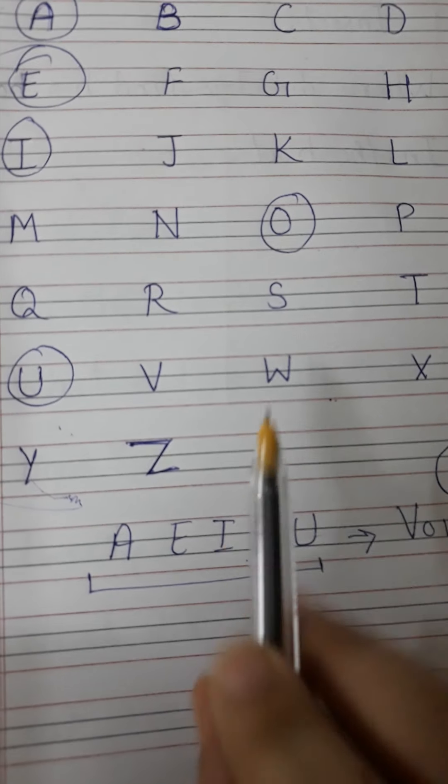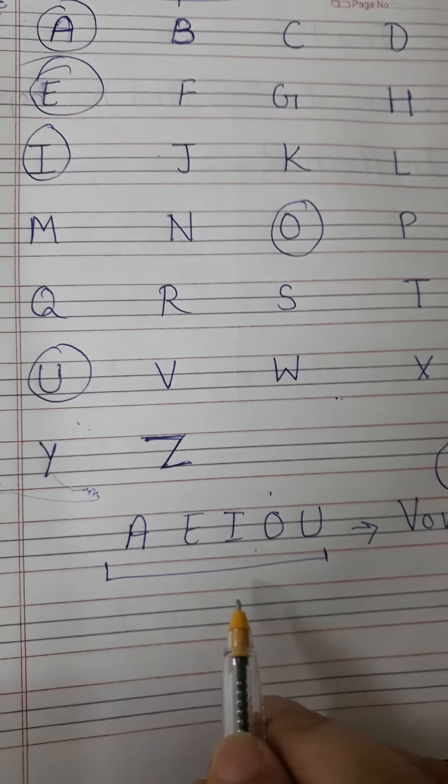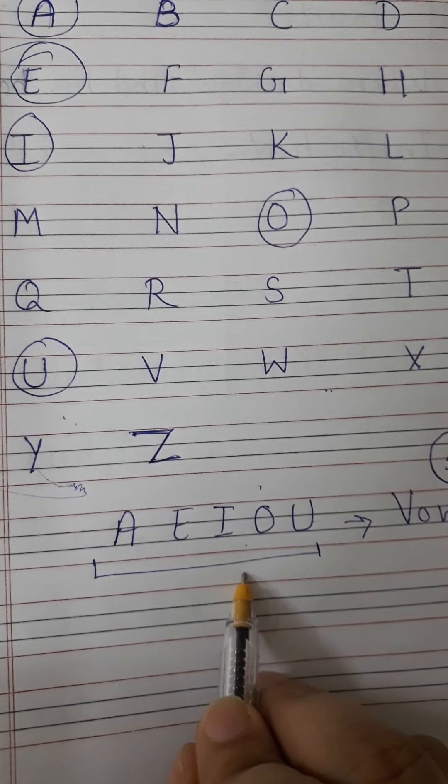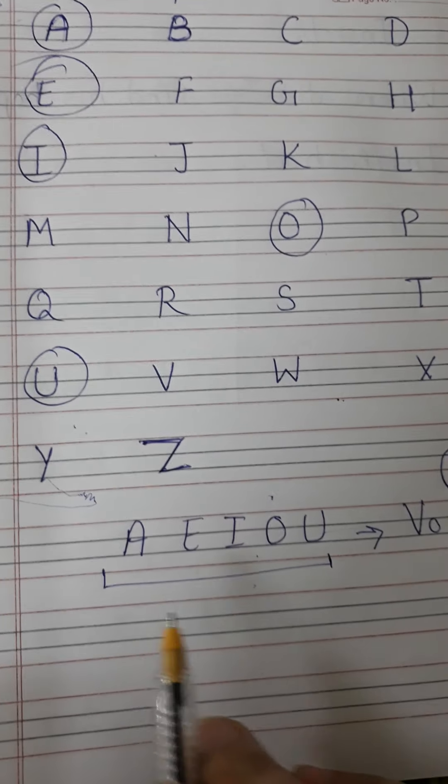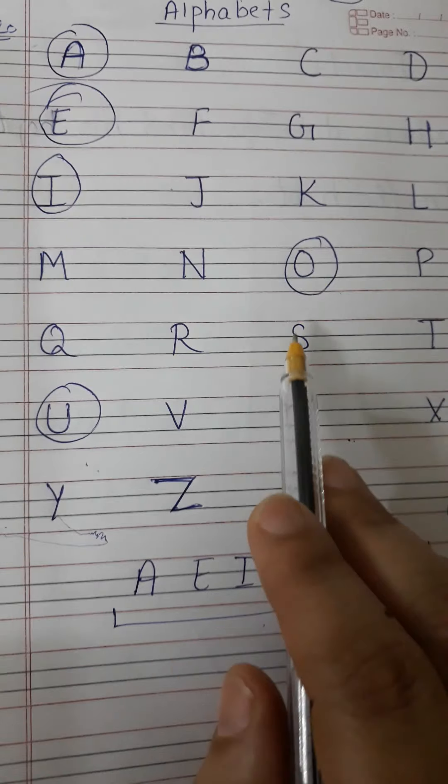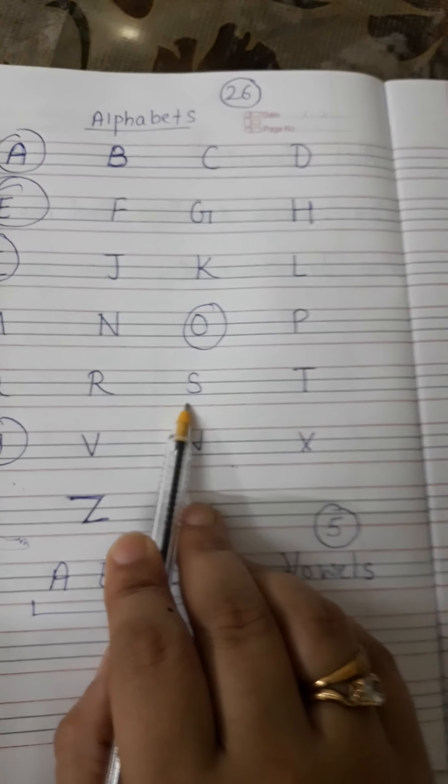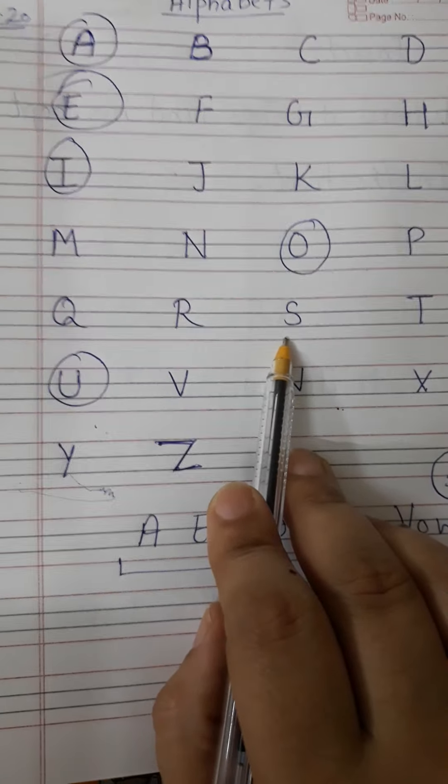So this is all about the vowels. Now are you clear about the vowels and consonants? A, E, I, O, U. Come on sing this song with me. A, E, I, O, U. So these are the vowels and rest all the letters are consonants. Clear? Okay.